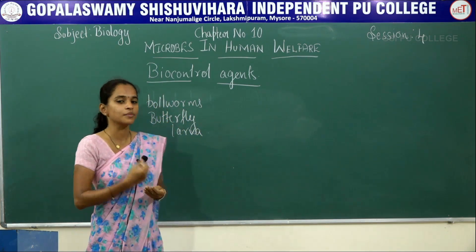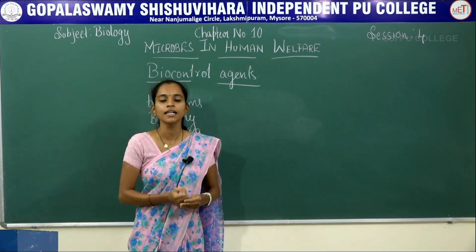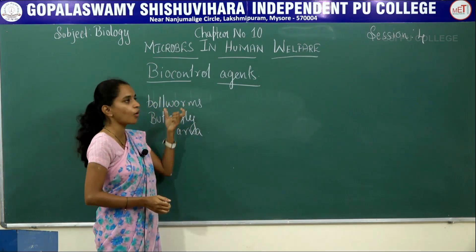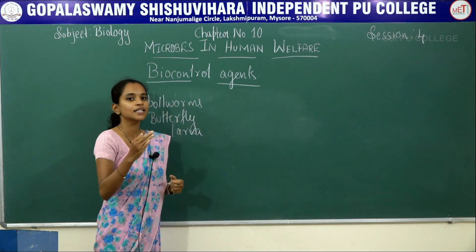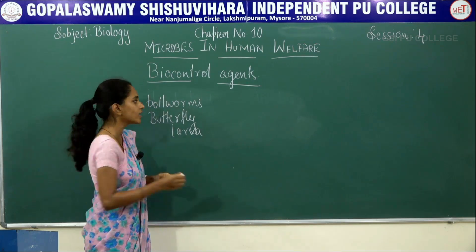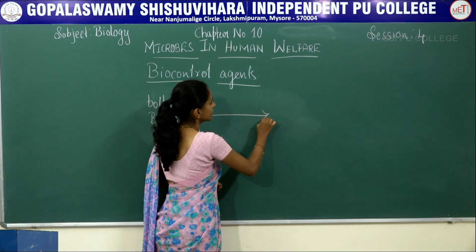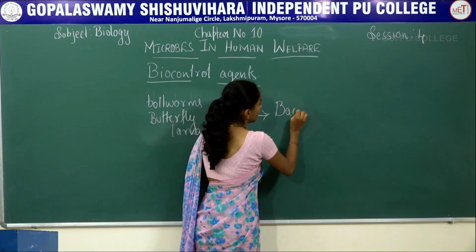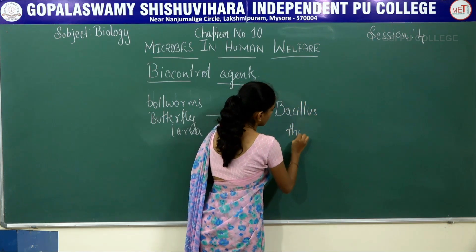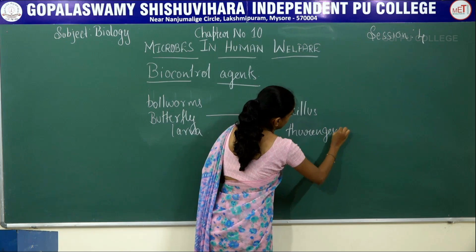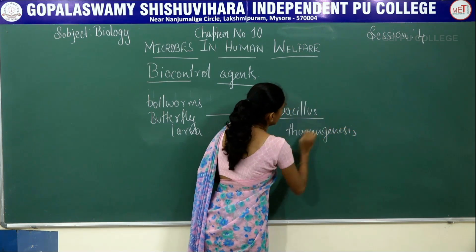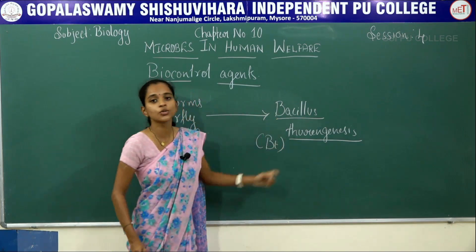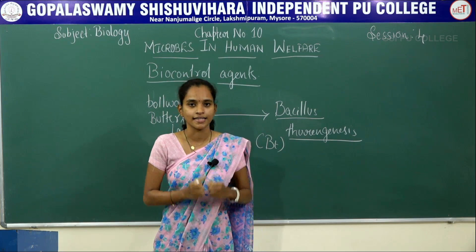There are many more types of insects or pests which you will learn in detail in the biotechnology and its applications chapter. For now, remember that bollworms and butterfly larvae are the basic pests which destroy crops. To overcome this, using the biotechnological method, a particular type of bacteria, Bacillus thuringiensis, commonly called Bt, is utilized.